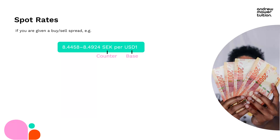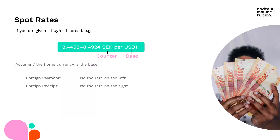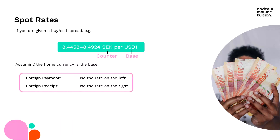There's a really nice rule when deciding which rate to use. Assuming the home currency is the base - in this example the US dollar is the base currency, so we're a US company - if you're making a foreign payment, use the rate on the left. If you're receiving foreign currency, use the rate on the right to exchange it. Just check that the home currency is the base, which it usually is in AFM, especially in recent exams.